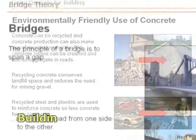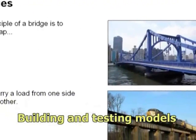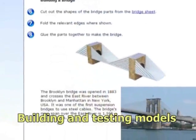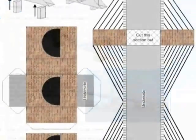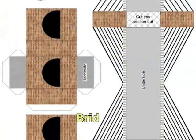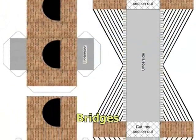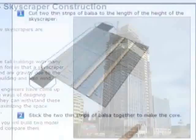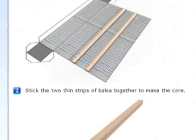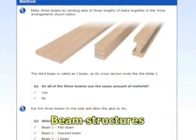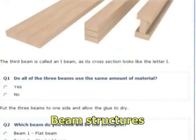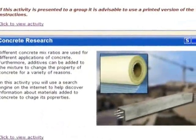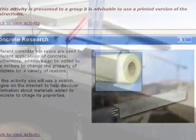Using a variety of modeling materials, students construct and test structures. Example models include bridges, skyscrapers to identify the importance of a central core, various beam structures to compare strengths, and reinforced beams to test their benefits.